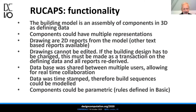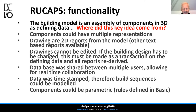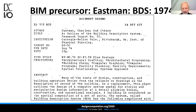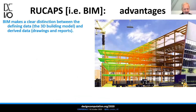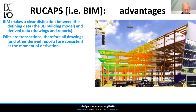Going back to this RU-CAPs functionality, I'm struck by the first sentence: 'building models as an assembly of components in 3D as defining data.' Where did this idea come from? The precursor is a paper by Chuck Eastman in 1974, where he outlines the Building Description System, BDS. The key sentence is: 'a building is considered as a spatial composition of a set of parts.' That statement from 1974 is the foundation for our whole BIM edifice. It makes a clear distinction between defining and derived data, deals with transactions, and reduces construction errors.